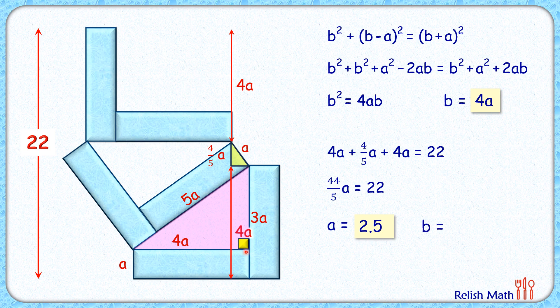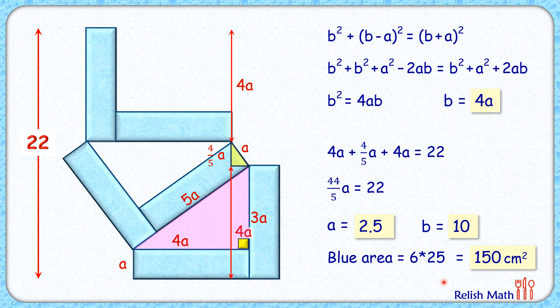Area of each rectangle is 25 centimeters squared, and area of this blue region with 6 rectangles will be 6 times 25 or 150 centimeters squared. And that's our answer. I hope you enjoyed the solution. I will see you in the next video. Till then, tata bye bye.